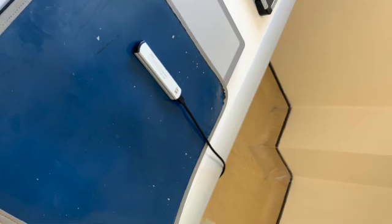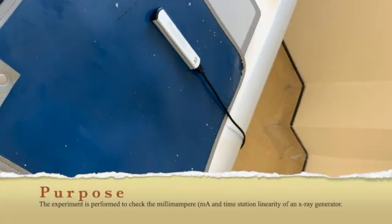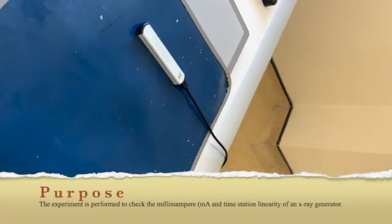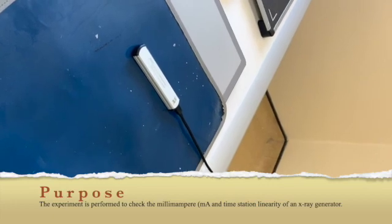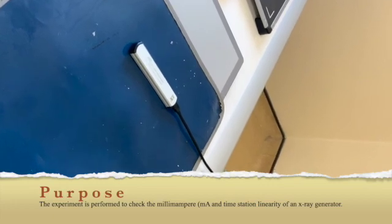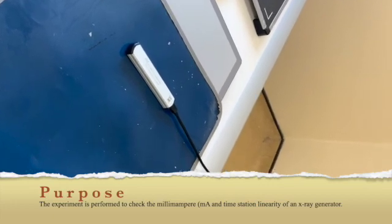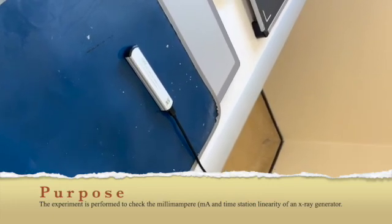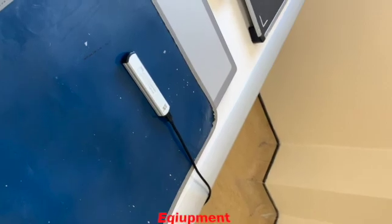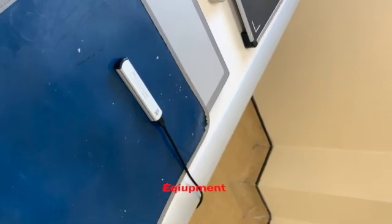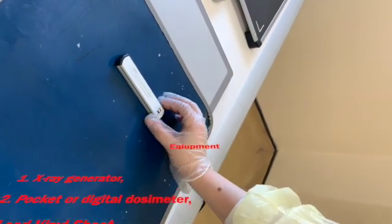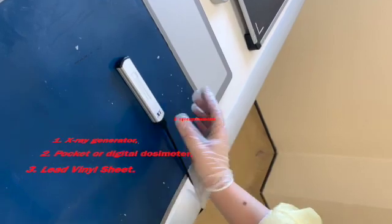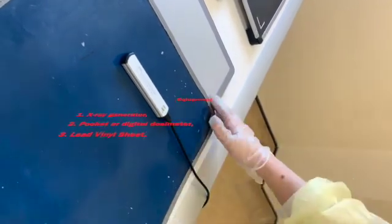We are doing experiment number two today, which is checking time linearity. For this experiment, we need an X-ray generator, which is the tube, a digital dosimeter, which is this device over here, and a sheet of lead vinyl with the IR.